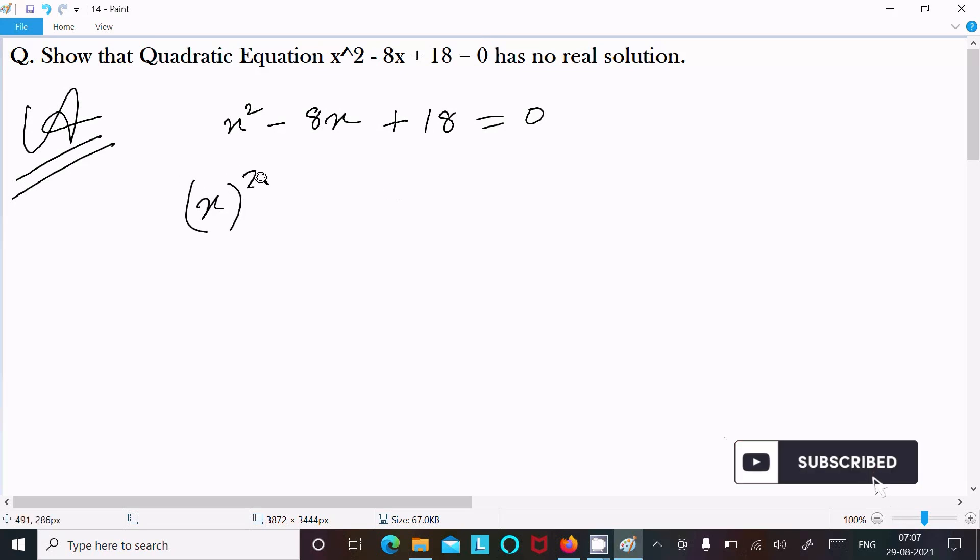So a square minus 2 into a into b. Here writing 4. 2ab. 2 into a, a is x, b is 4.